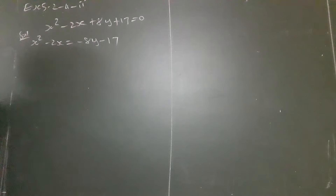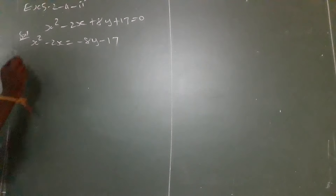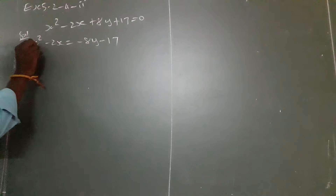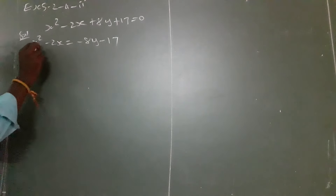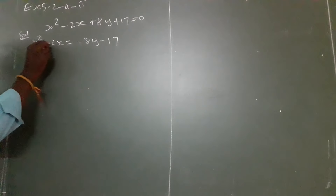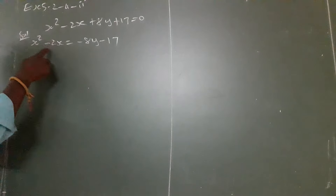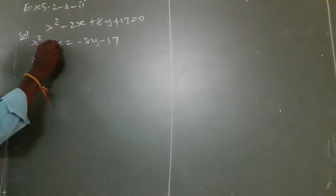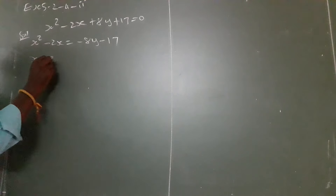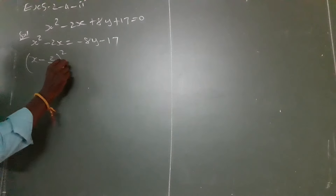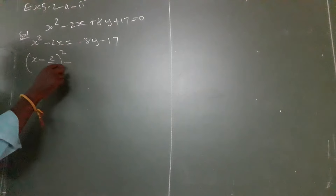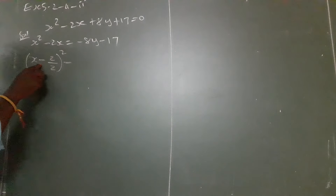Now I am going to use the complete square concept for only the left-hand side. The x squared term is there, so write the x term. What is the symbol here? Minus — write the same symbol here. Now divide the coefficient of x, always by 2. The coefficient of x is 2, divided by 2, then whole square. Here, always minus only will come.